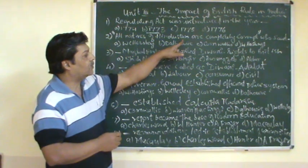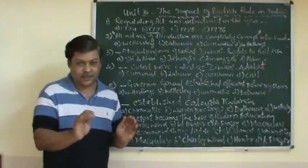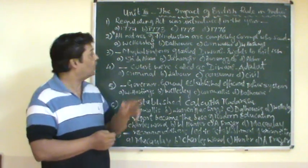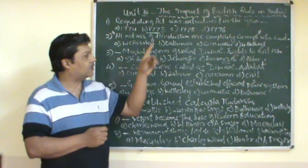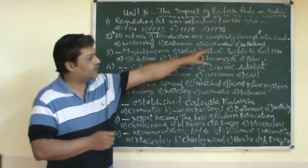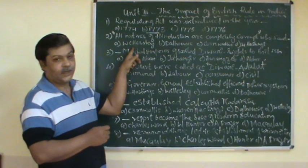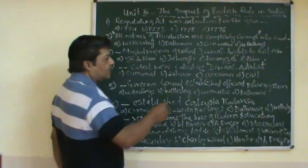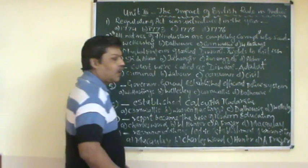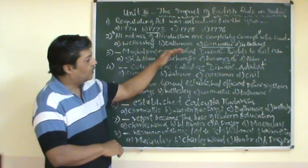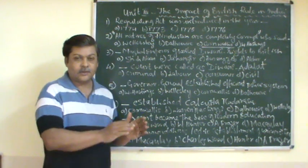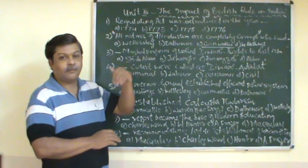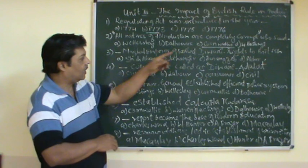The next question: 'All natives of Hindustan are completely correct' — this is a statement made by one of the Governor Generals. The question is who said this. The choices are Cornwallis and others. The answer is Cornwallis. He was the Governor General who made this statement about the natives of Hindustan.